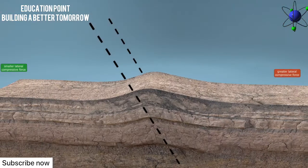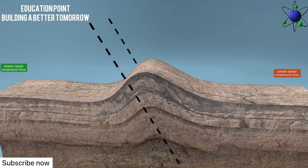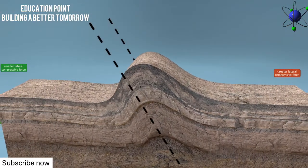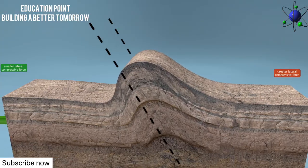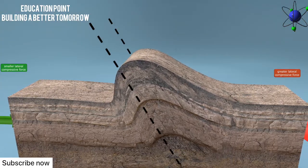When the compression is stronger on one side, an overturned fold is formed. The axis of overturned folds leans at a small angle from the vertical.